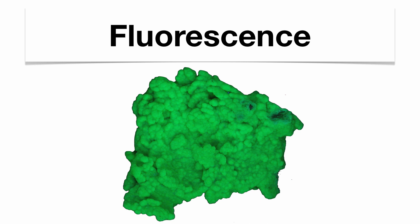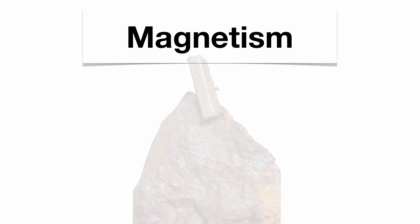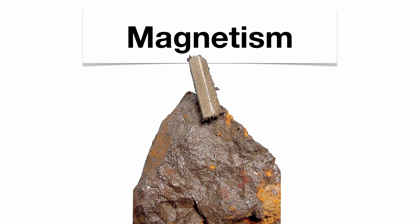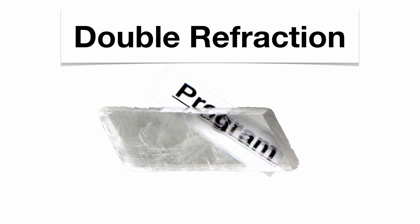There are some special properties that a mineral can have. Some minerals are fluorescent, which means they will glow underneath a black light. You can get some mineral samples that have magnetism, like this sample of magnetite. And you can get some minerals that have double refraction, such as calcite — when the mineral sample is placed over a word, you see a double image of that word.